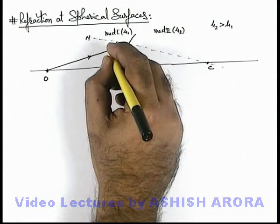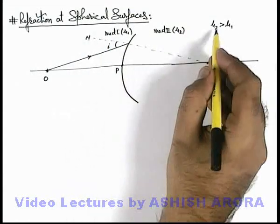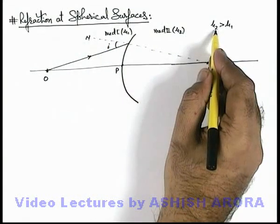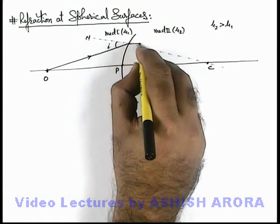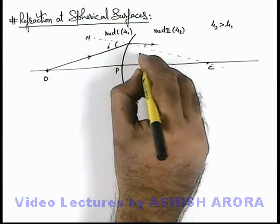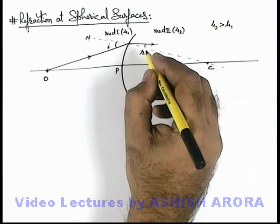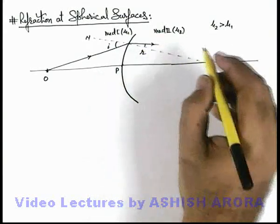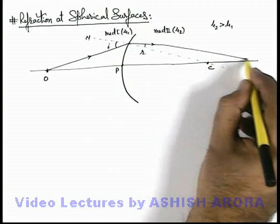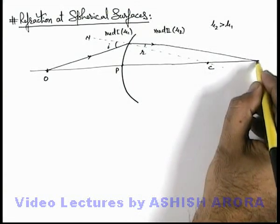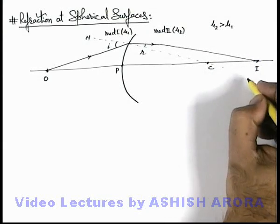So this angle will be the angle of incidence i. Since medium 2 is the denser medium, the light ray will bend toward the normal at an angle r. Here i and r can be related by using Snell's law. If the refracted ray is extended, it finally meets the optic axis at a point, creating an image.